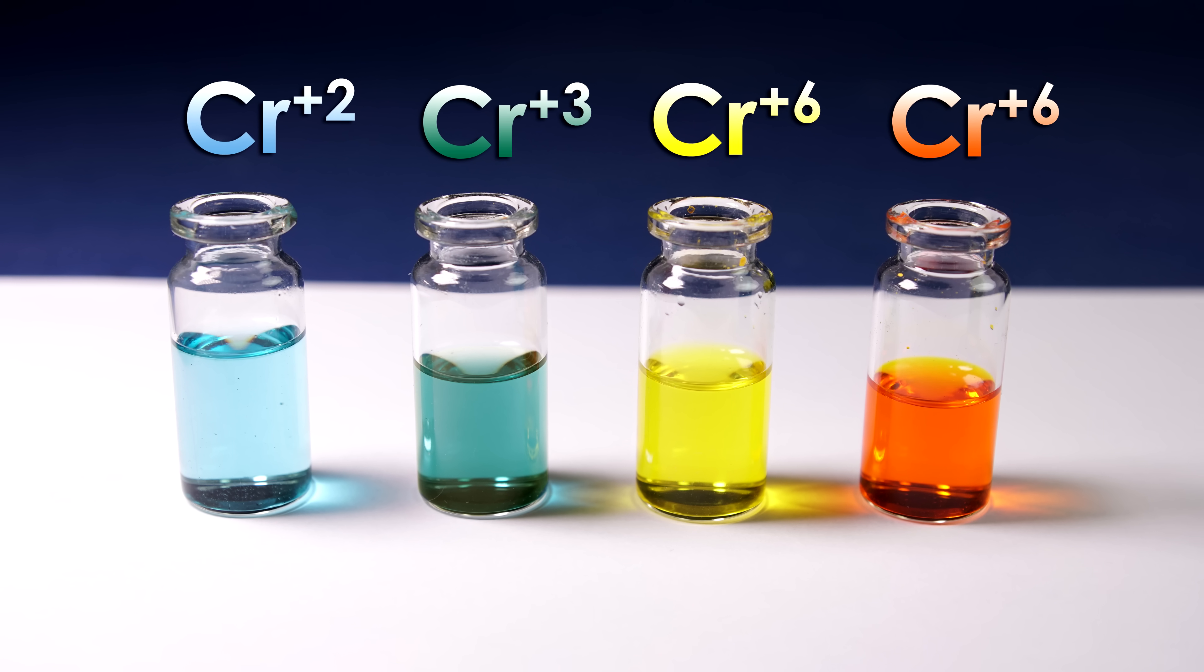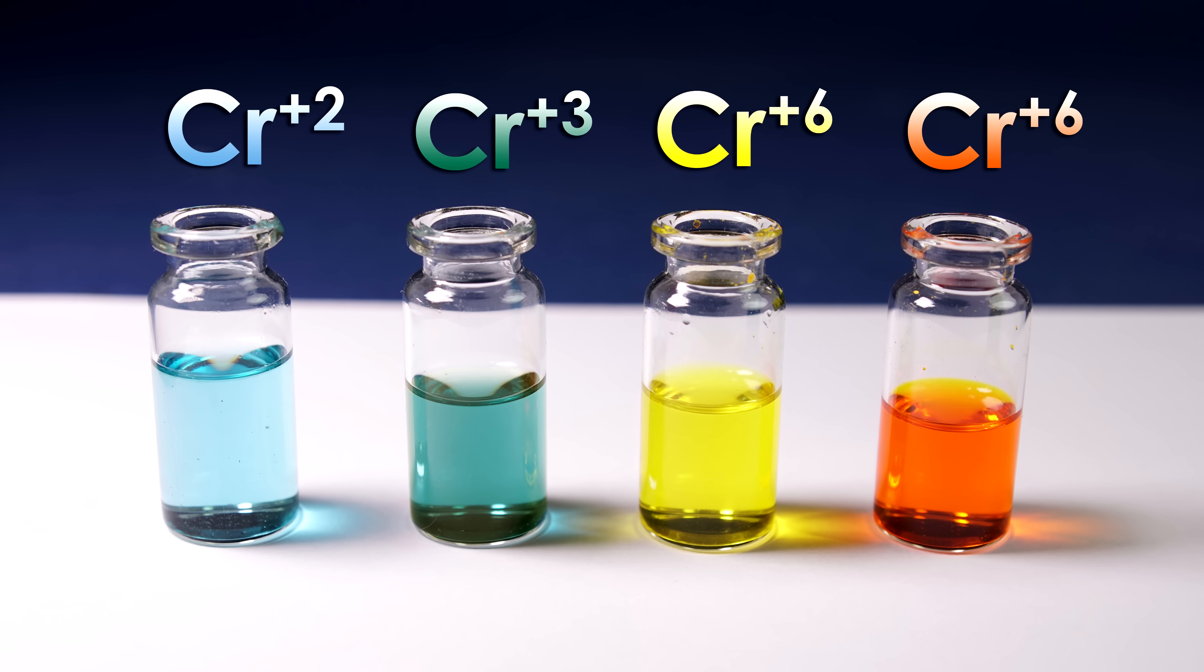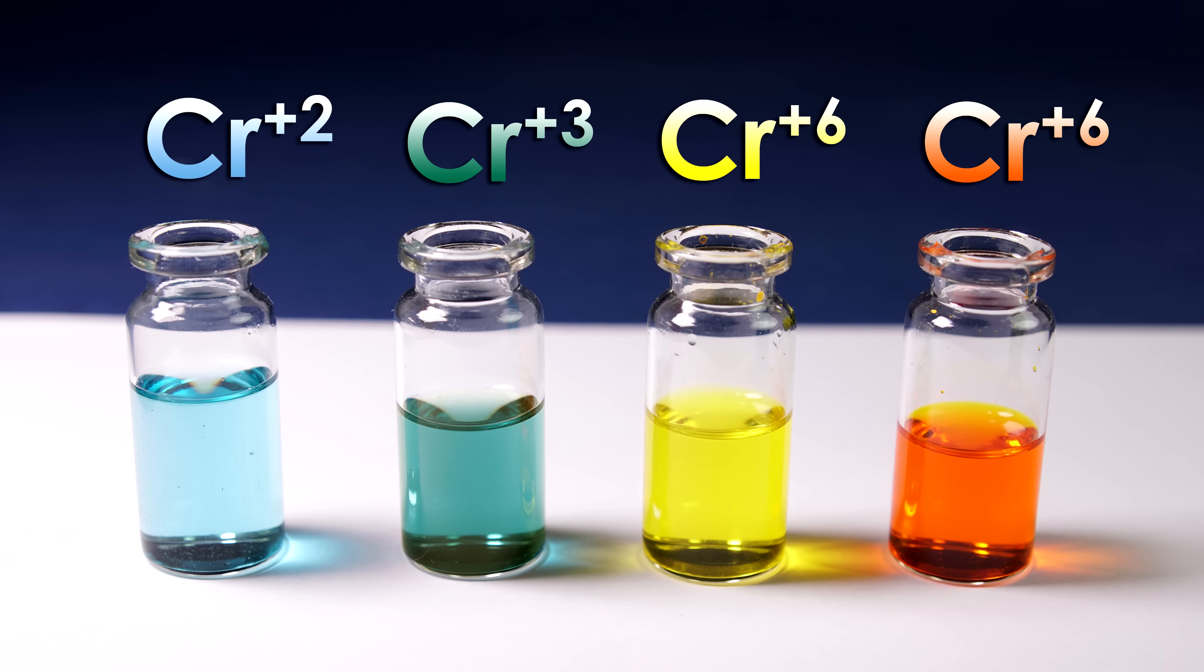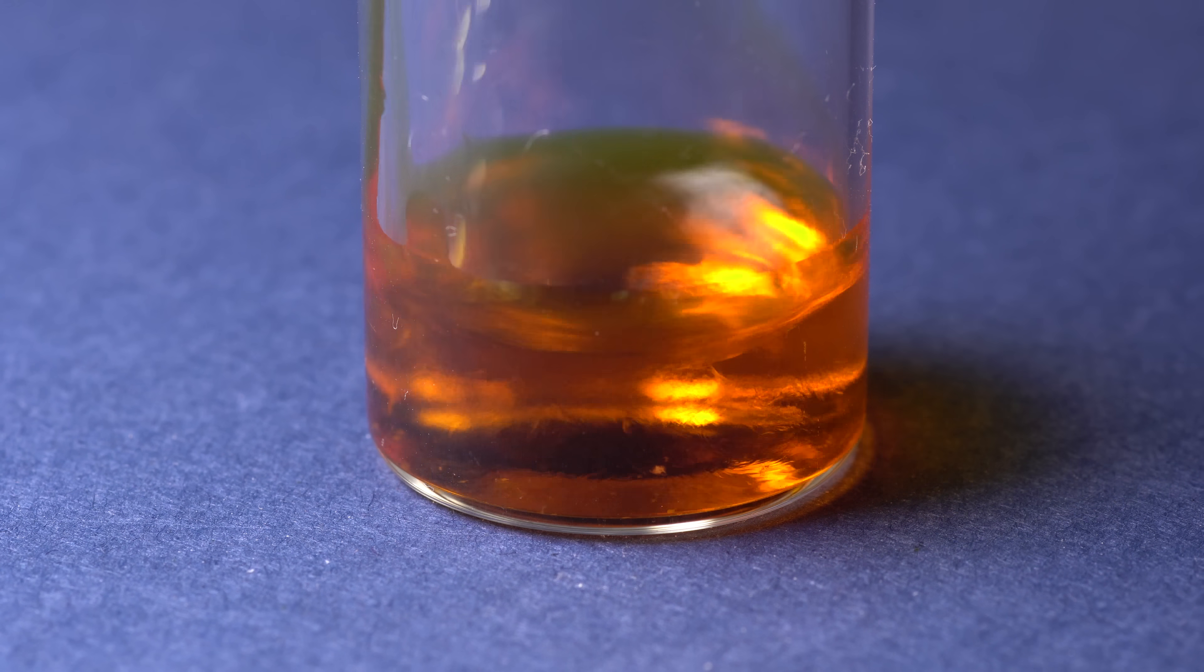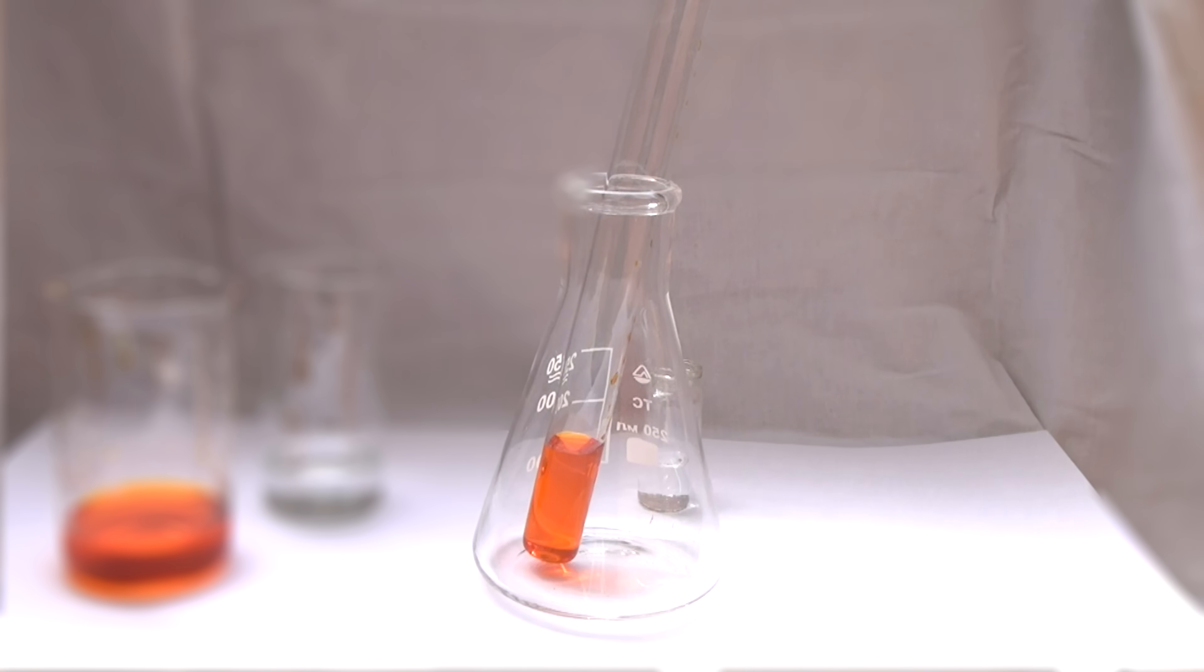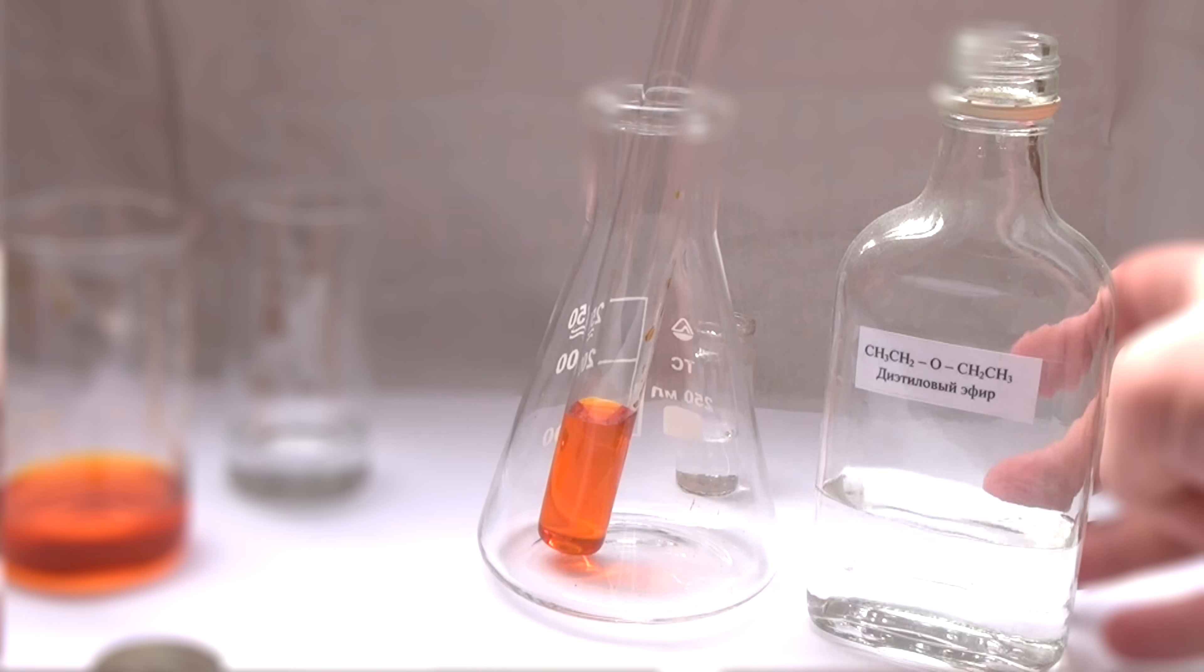So, now we have a whole set of colored chromium compounds of different oxidation states. True, that's not all. Chromium compounds can also be used for another colorful experiment, to create a flag in a test tube.